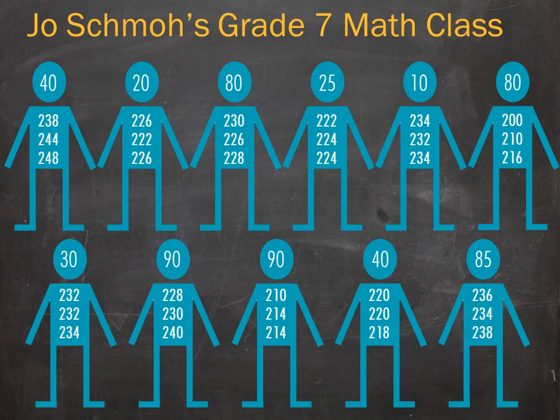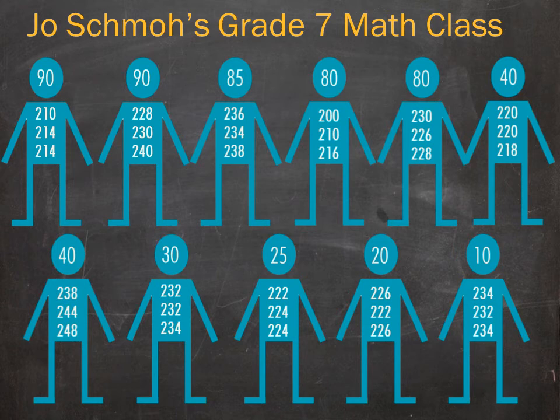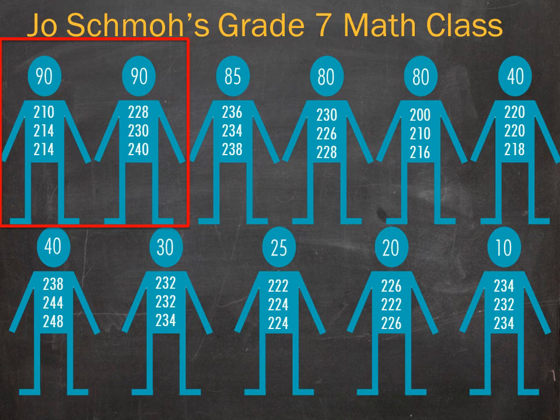Returning to Joe Schmoe's class, each student now has an SGP based on how well each did compared to the students in the corresponding statewide test score cohort. The students in the class are ranked according to their SGP score. Students with very different scores can have the same SGP. The student we have followed has an SGP of 90. Another student also has an SGP of 90, but that student's score did not change this year and the score is much lower — 214 compared to 240.